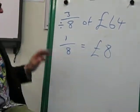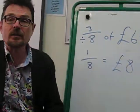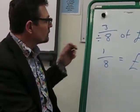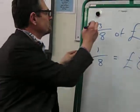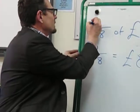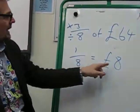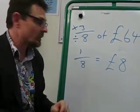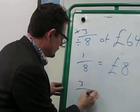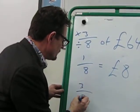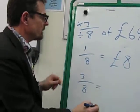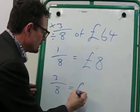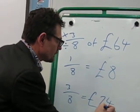Now that's 1 eighth. We need to find out what 3 eighths is. So we now need to multiply by the numerator. So 8 times 3 is 24. Fantastic — it's as easy as that. So 3 eighths of my 64 pounds is 24 pounds.